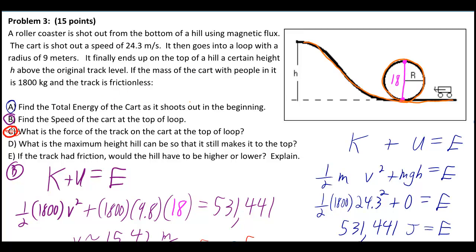Find the total energy of the cart as it shoots out in the beginning. We can just use K plus U equals E. Kinetic energy plus potential energy equals the total energy, which is a constant. Kinetic energy is one half mv squared, and potential energy is mgh because it's just gravitational potential energy. That's the formula for gravitational potential energy.